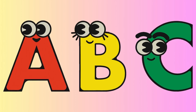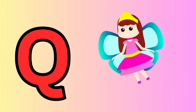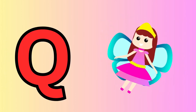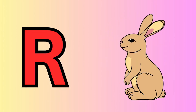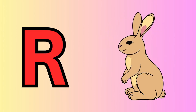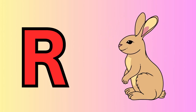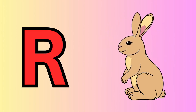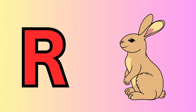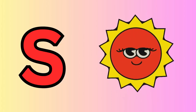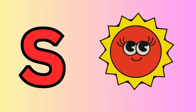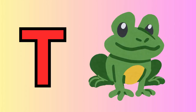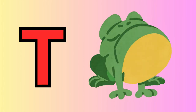Q is for queen, q-q-queen. R is for rabbit, r-r-rabbit. S is for sun, s-s-sun. T is for toad, t-t-toad.